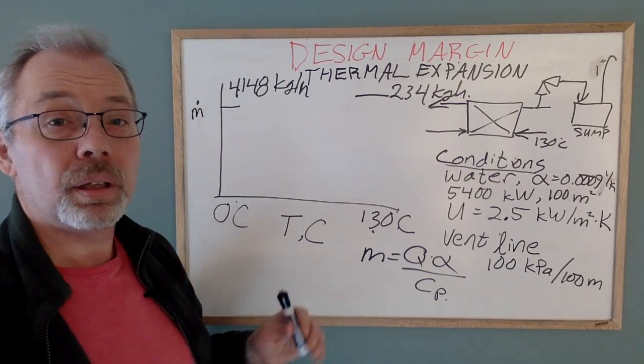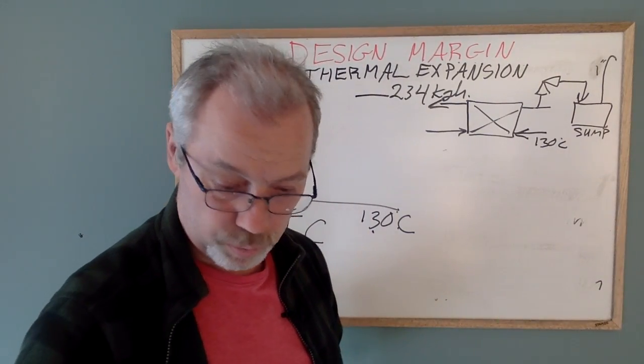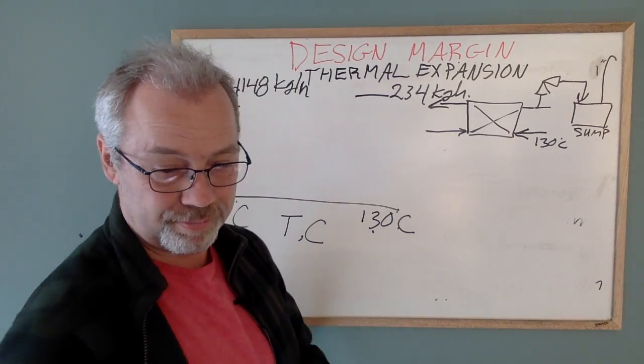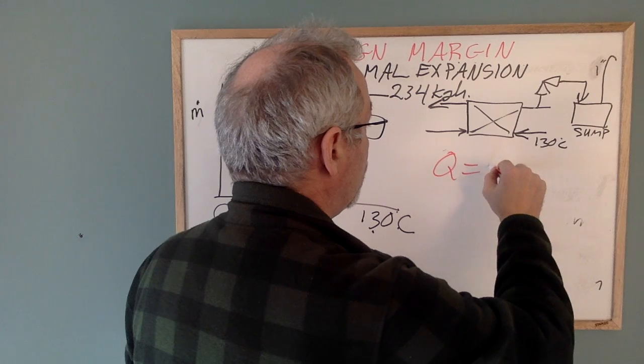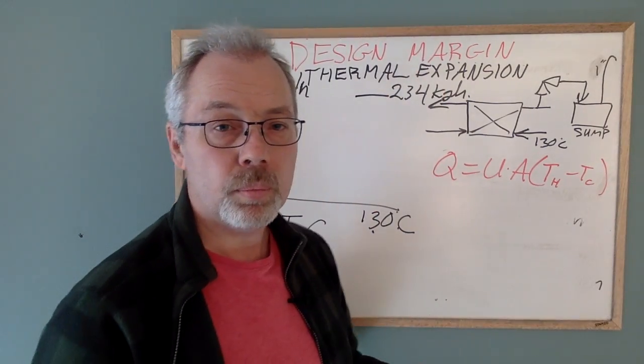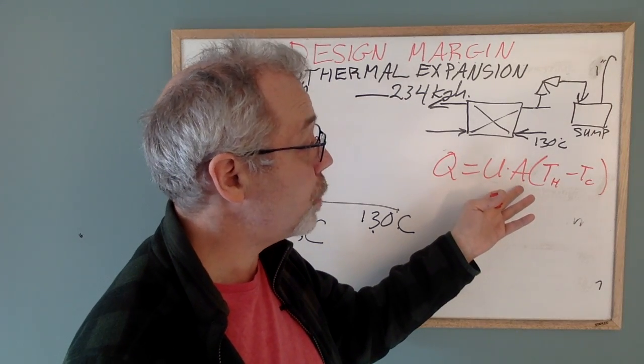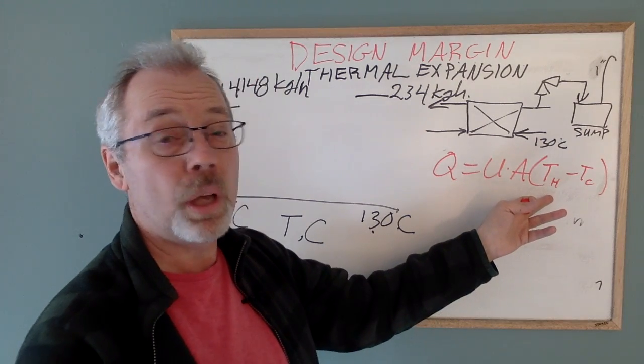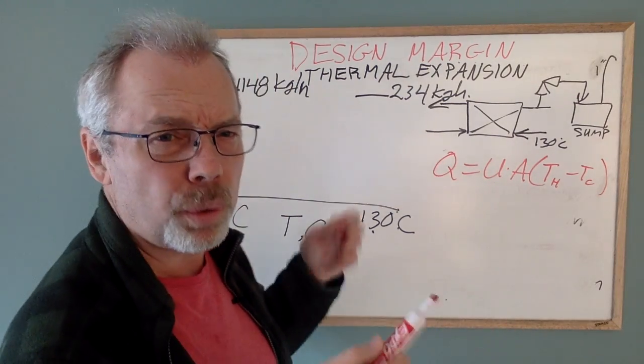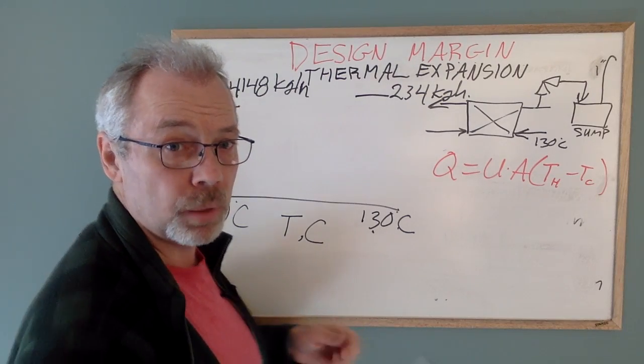So instead, let's approach this as a heat transfer problem. As a heat transfer problem, Q is equal to U A (T_hot minus T_cold). And in this case, we know what the heat transfer coefficient is. It's 2.5 kilowatts per meter squared Kelvin. 100 square meters for the area. The hot side is at 130 Celsius. And we'll let the cold side vary from 0 degrees up to 130 degrees. I won't do the math here. Check out my website, check out my blog. Look at the math for the relieving mass flow.